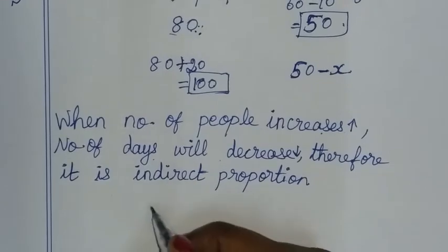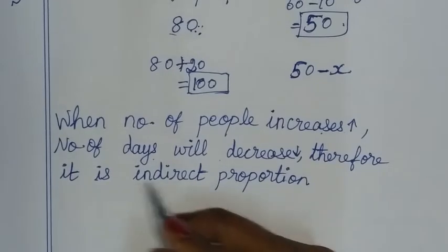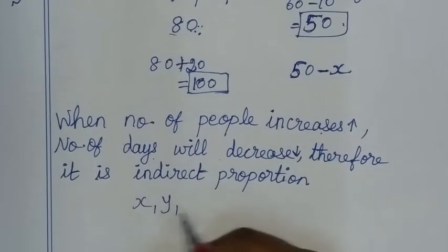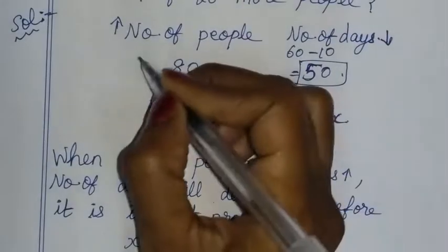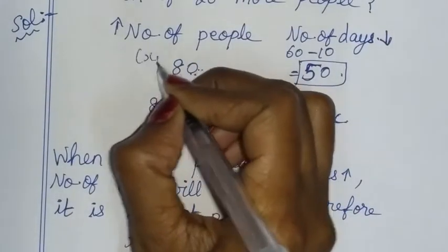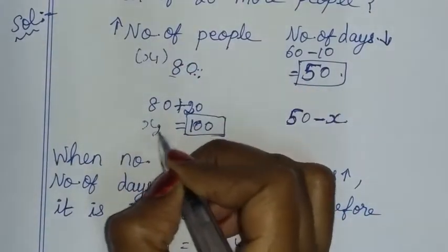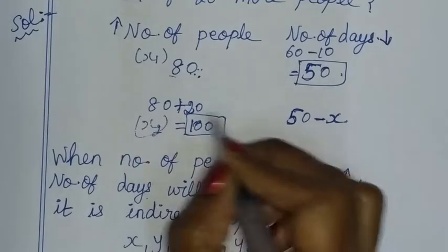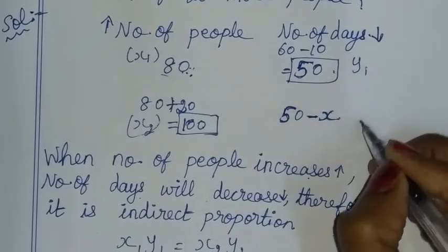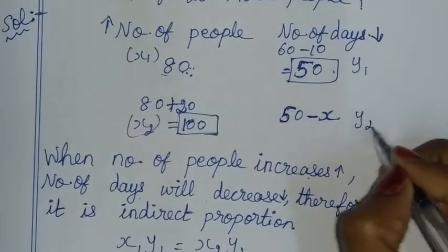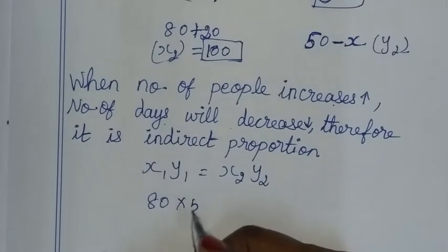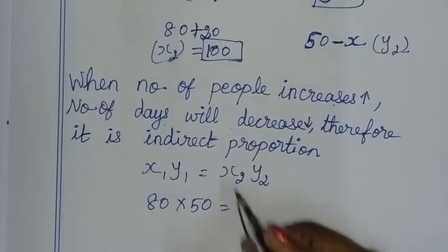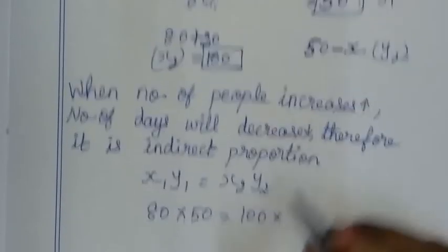Now, the formula for indirect proportion is: x1 × y1 = x2 × y2. So x1 is 80, y1 is 50, x2 is 100, y2 is (50 minus x). Therefore: 80 into 50 is equal to 100 into (50 minus x).